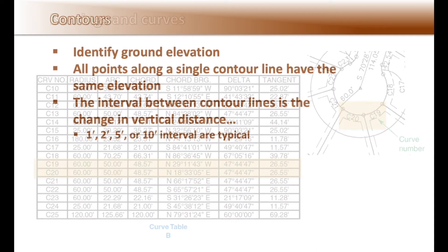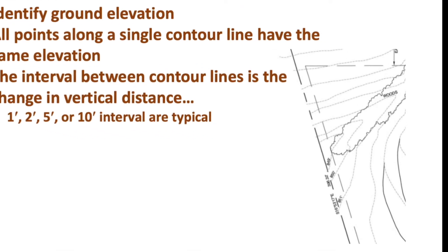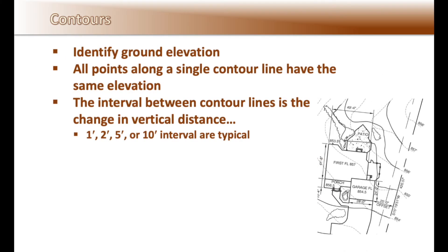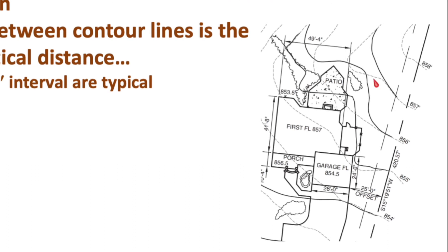Contours identify ground elevation. All points along a single contour line have the same elevation. The intervals between contour lines is the change in vertical distance, like 1 foot, 2 foot, 5 foot, and 10 foot are typical, as seen here where the contours are 1 foot change in elevation. The existing contour lines are typically shown as dashed lines, while the new contour lines are shown as solid lines.